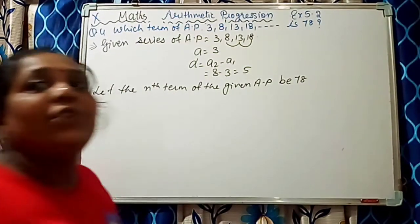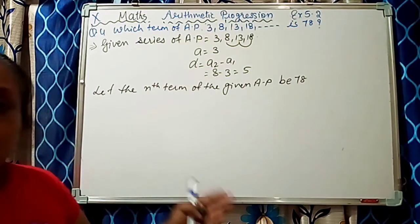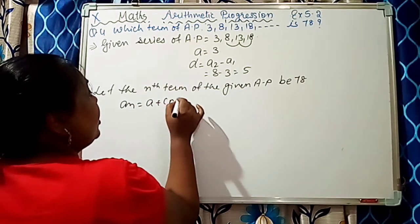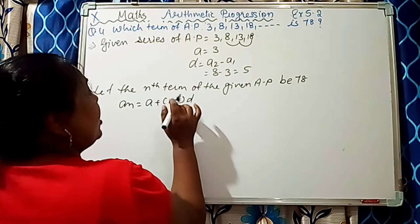We know the formula. AN is equal to A plus N minus 1, D.